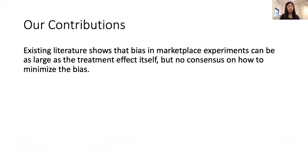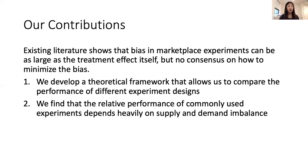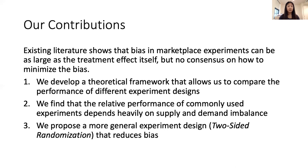In this work, existing literature has already shown that the bias can be very large, but there's no consensus on how to minimize this bias. So we first develop a theoretical framework that allows us to compare across experiment designs and say which designs perform better. We then find that the relative performance of these commonly used designs depends heavily on market balance conditions — supply and demand imbalance. Finally, we use the intuition from supply and demand imbalance to propose a more general experiment design based on two-sided randomization that reduces bias.